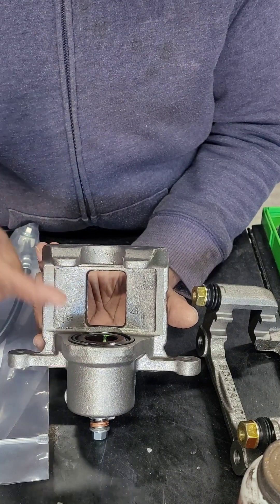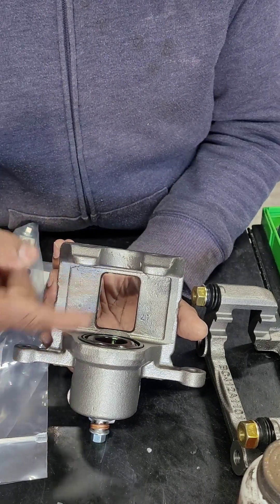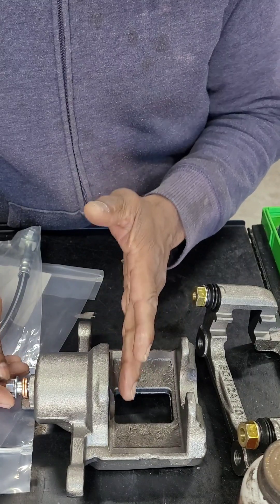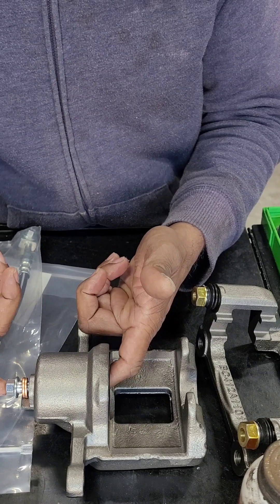If this comes out and you want to know if your caliper is good or not—if you're having a brake problem eating up your brake pads—what you want to do is when you use one of the clamps to push it back in (they have special tools to push this back in), sometimes I will use one of these, but you've got to be careful with this.